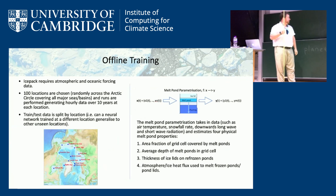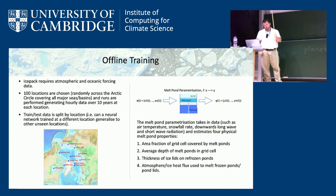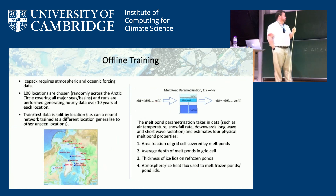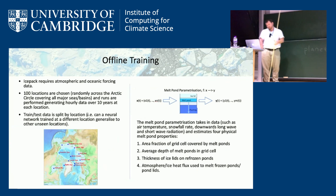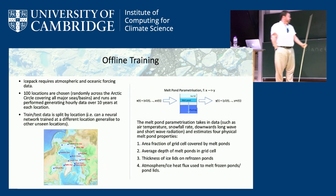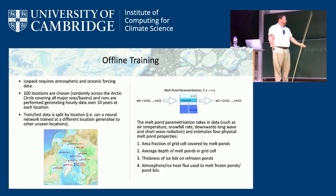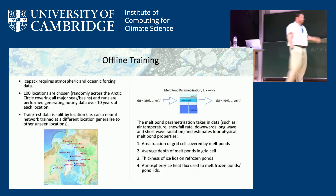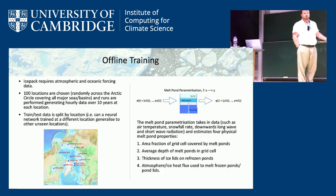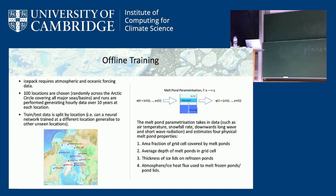The ice pack model requires atmospheric and oceanic forcing data. We chose 100 locations across the Arctic circle — including sink-down regions — for this 1D column model. We split training, validation, and test data by location, so if you train at one location, you generalize to others. We run simulations at 100 locations for 10 years each, generating our training data: inputs and outputs of the melt pond parameterization across 100 locations.